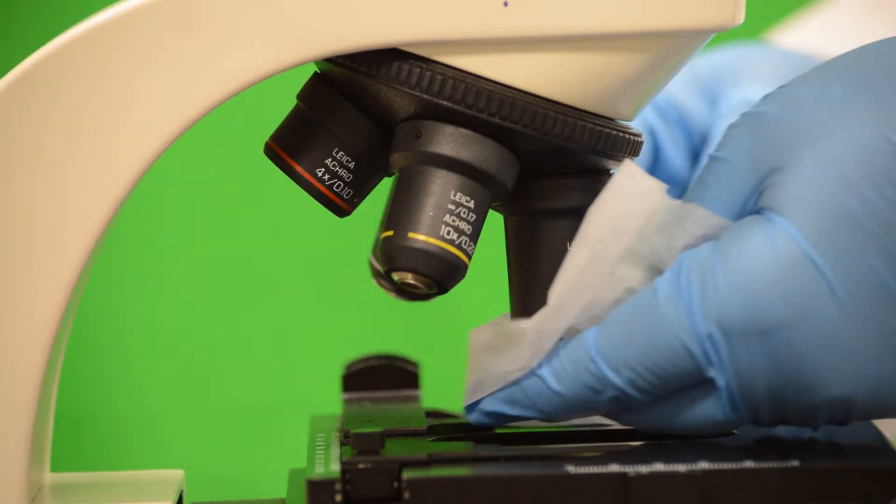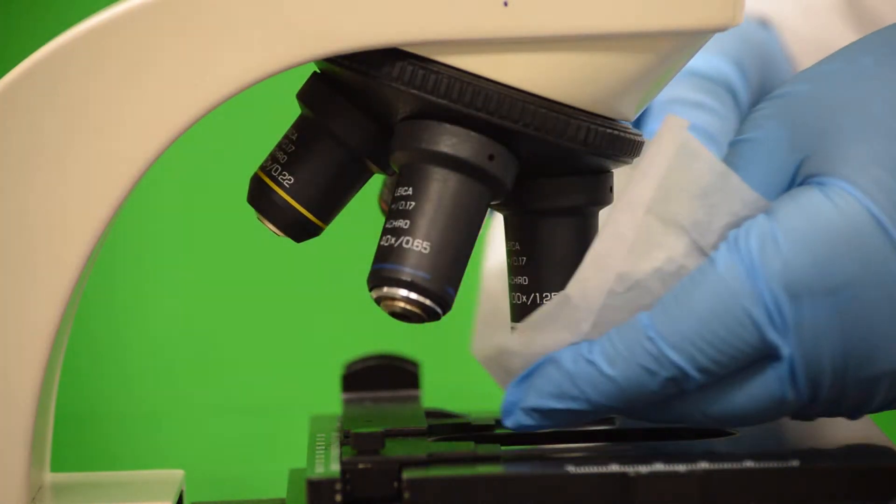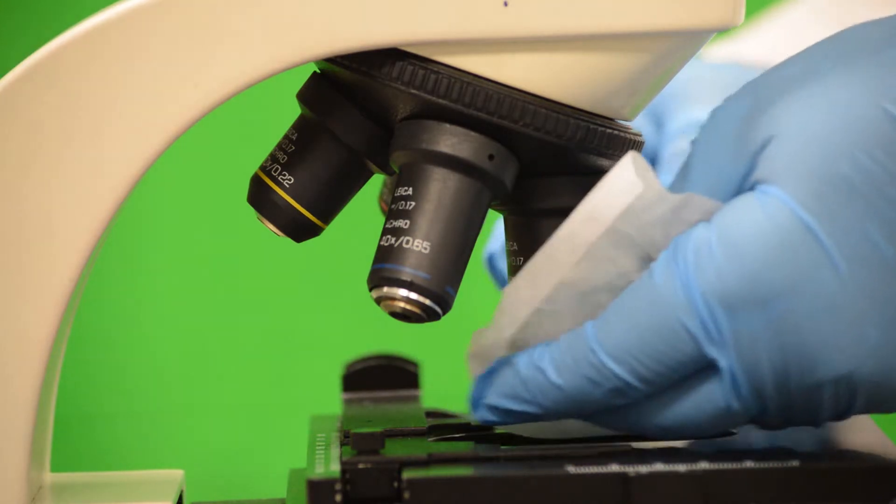Take a second sheet of lens paper, crumble it, and use it to wipe the lens dry to remove any moisture.